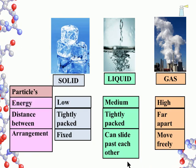From an energy perspective, the higher the particle's energy, the more likely it is to move about. So colder, low energy particles stay in a fixed position. If they are heated up and gain more energy, they begin to slide past each other. Further heating allows them to break free of each other and disperse into their environment.